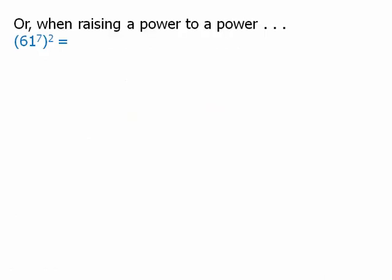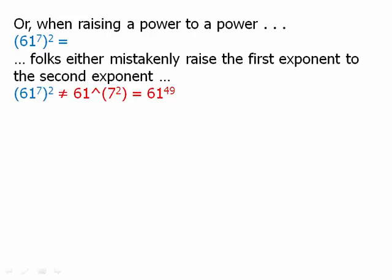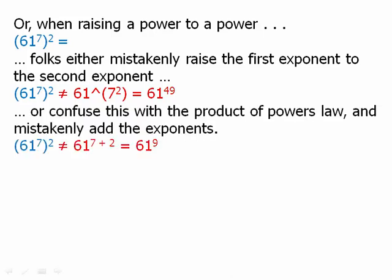Raising a power to a power is a really good one because there are all kinds of mistakes people can make. Either they mistakenly raise the first exponent to the second exponent — that's one kind of mistake. Another mistake is they confuse this with the product of powers law and mistakenly add the exponents — that's another kind of mistake. Of course, what you're supposed to do is multiply the two exponents, so the correct answer would be something like six to the fourteenth.